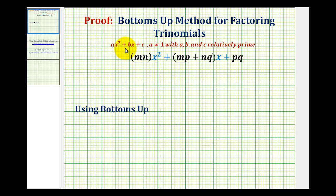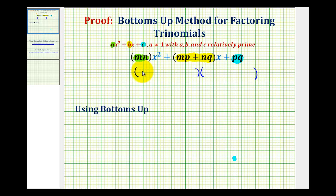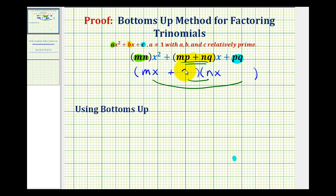We'll start by verifying that our trinomial is factorable. To do this, we're going to let a equal m times n, let c equal p times q, and let b equal the quantity mp plus nq. So if we were to try to factor this trinomial using the trial and error method, we know it would factor into two binomial factors where the first terms come from the factors of mnx squared — let this equal mx and nx — and the second terms come from the factors of pq, so the sum of the inner and outer products equals the middle term, the quantity mp plus nq times x.